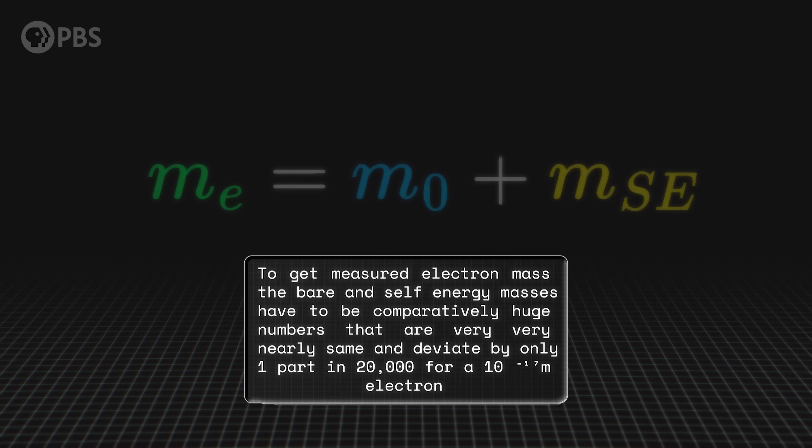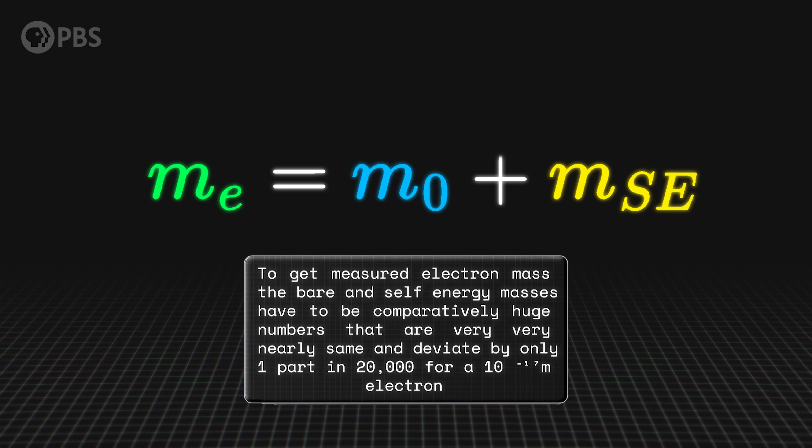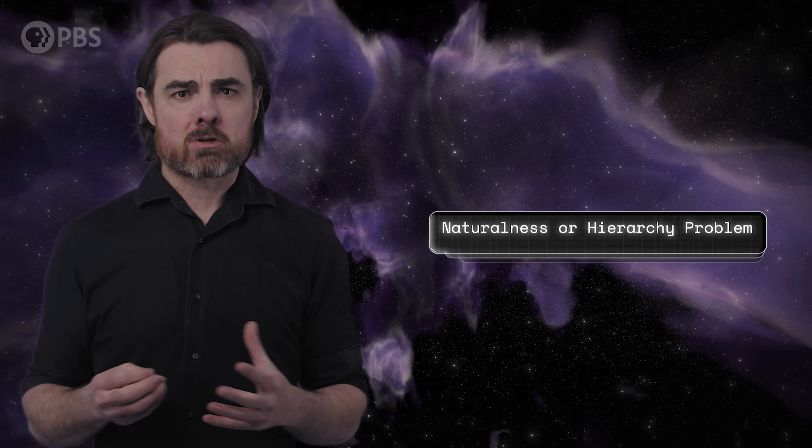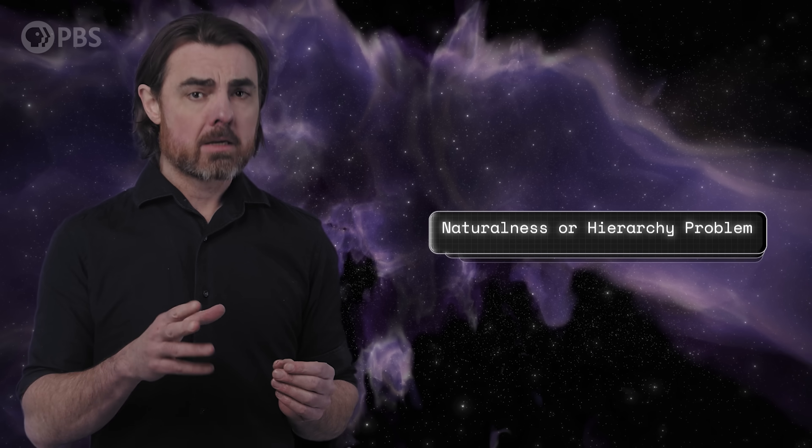Besides, we now have a bigger problem than negative bare masses. It's the fact that to get our tiny measured electron mass, the bare and self-energy masses have to be comparatively huge numbers that are very, very nearly, but just not quite the same, deviating from each other by only one part in 20,000 if we take the self-energy mass to be for a 10 to the minus 17 meter electron. This doesn't seem natural somehow. It would require a type of fine-tuning for these seemingly very different sources of mass. I mean, it'd be one thing for them to be exactly equal, but to be only almost equal? This type of problem is generally called a naturalness or hierarchy problem.